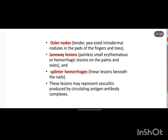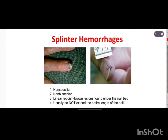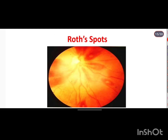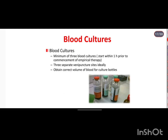The three specific signs of infective endocarditis are Osler's nodes, Janeway lesions, and splinter hemorrhages. Splinter hemorrhages are linear lesions present beneath the nails, appearing as reddish-brown lesions under the nail beds. Janeway lesions appear as non-painful macules on the palms and soles. Osler's nodes are painful erythematous nodules on the fingers and toes.